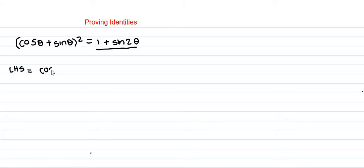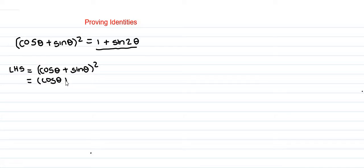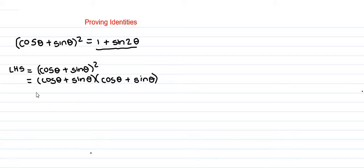Our left-hand side is (cos θ + sin θ), all squared. So we expand: right-hand side becomes (cos θ + sin θ) multiplied by (cos θ + sin θ). We expand the bracket and multiply by cos.